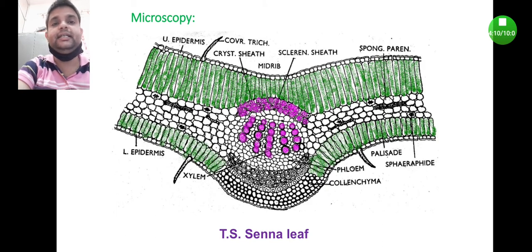Few important characteristic features of Senna include the presence of calcium oxalate crystals in spongy parenchyma - it is very specific in Senna - then unicellular covering trichome and presence of paracytic stomata. These three are considered as the characteristic features of the microscopy of Senna leaf.